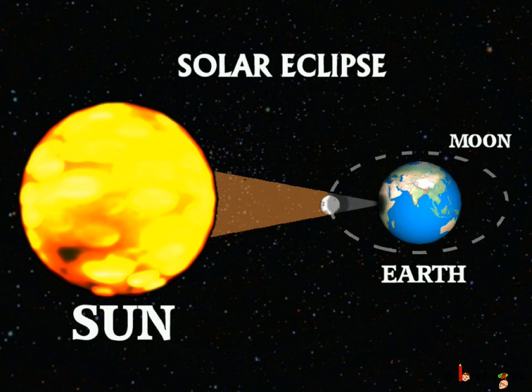When the Moon comes in between the Sun and the Earth, it blocks the light of the Sun and casts a shadow on a small portion of the Earth. The people living in the shadow area of the Earth are hence not able to see the Sun. This is called as Solar Eclipse.